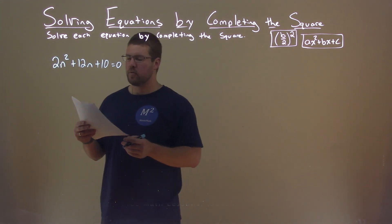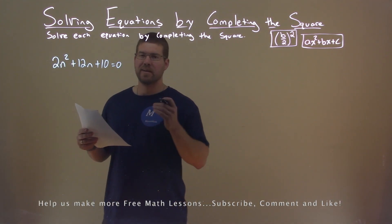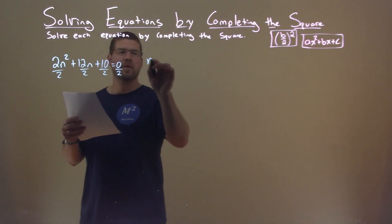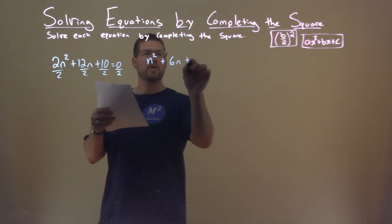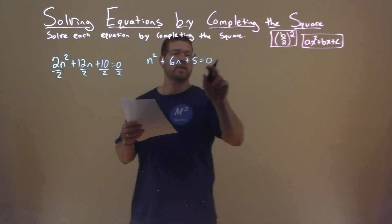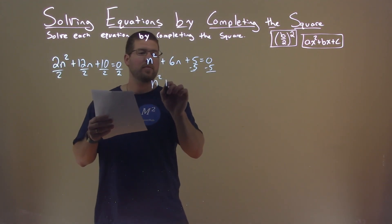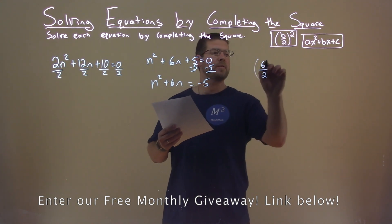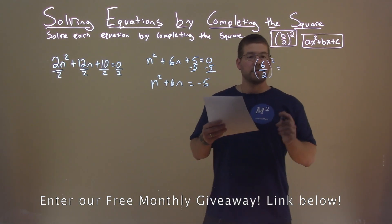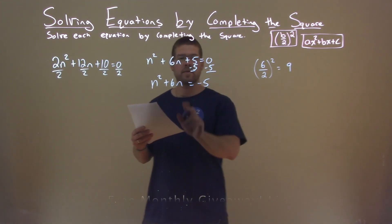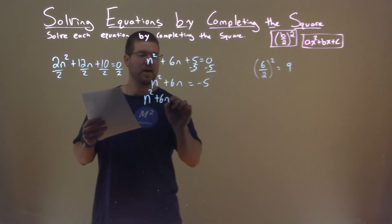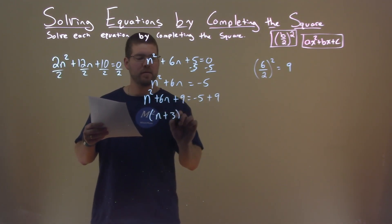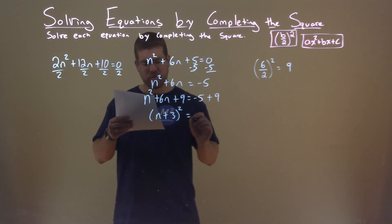We're given this problem right here: 2n squared plus 12n plus 10 equals 0. We want to solve this by completing the square. First thing I'm going to do is divide all parts by 2, leaving me with n squared plus 6n plus 5 equals 0. Subtracting 5 from both sides: n squared plus 6n equals negative 5. Now I look at my B value, which is 6. Dividing by 2 and squaring it: 6 divided by 2, squared, is 9. Adding 9 to both sides: n squared plus 6n plus 9 equals negative 5 plus 9. The left-hand side is a perfect square — n plus 3, squared — and negative 5 plus 9 is positive 4.